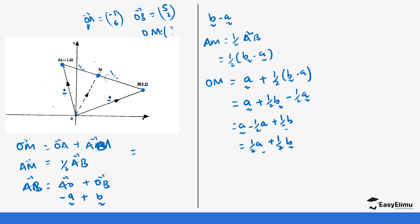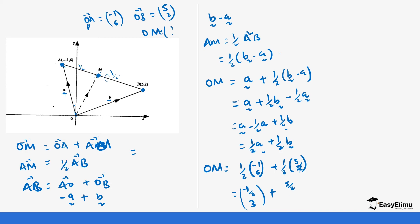So we have one-half A and one-half B. To get the exact coordinates of OM: one-half of A where A is (-1, 6) plus one-half of B where B is (5, 2). That gives one-half times (-1) = -½ and one-half times 6 = 3, plus one-half times 5 = 5/2 and one-half times 2 = 1. Working this out: the x-component is -½ plus 5/2, which with LCM of 2 gives (-1 + 5)/2 = 4/2 = 2.